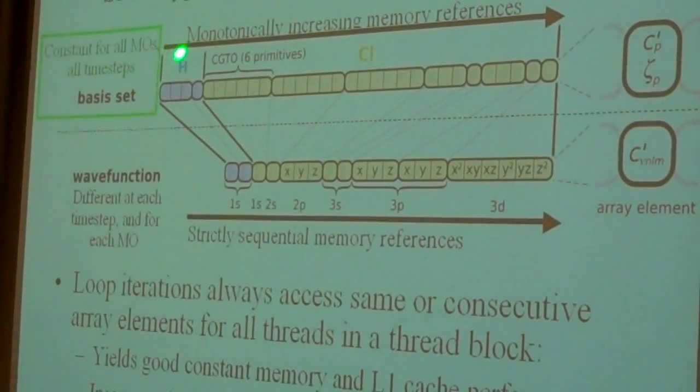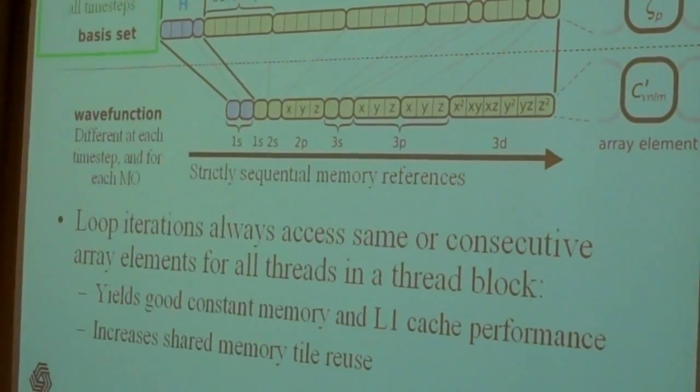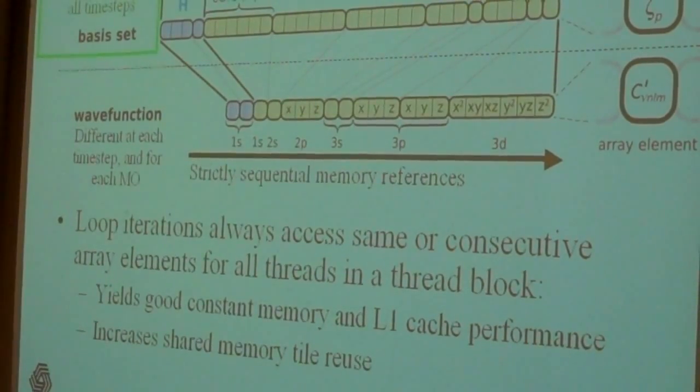And so when we work through those calculations, we're walking through memory in strictly consecutive memory accesses. In the case of the basis set, we're either walking to the next element or we're using the same one the next time through. So it just depends on what the basis set contains. And for the wave function data, we are always walking through memory one cell to the next in a strictly consecutive order.